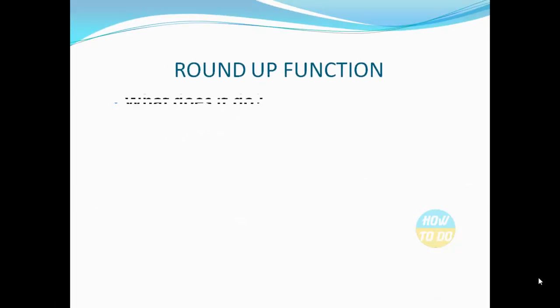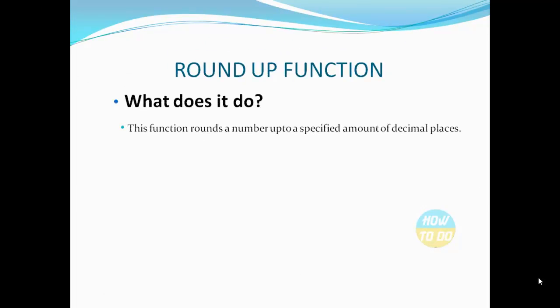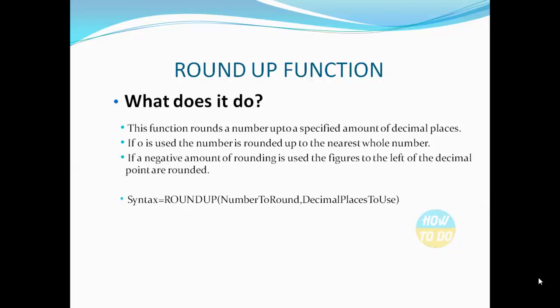Now let's understand what this ROUNDUP function is and what it does. This function rounds a number up to a specified amount of decimal places. If 0 is used, the number is rounded up to the nearest whole number. If a negative number of rounding is used, the figures to the left of the decimal point are rounded.